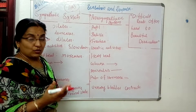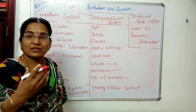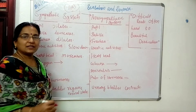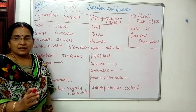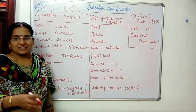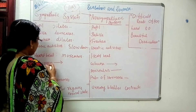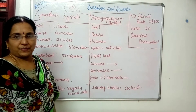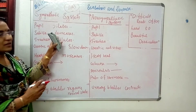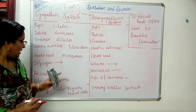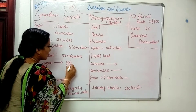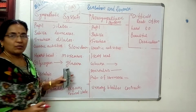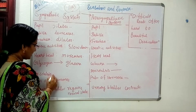When the normal glucose level exceeds normal, it is converted into glycogen and stored in the liver. Whenever we need more energy, the hormone glucagon converts glycogen back into glucose. During these instances of fear or stress, glycogen is converted into glucose to produce more energy.